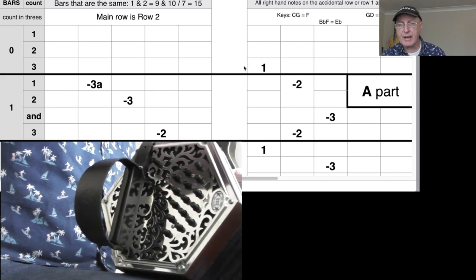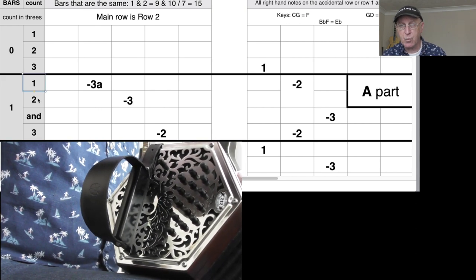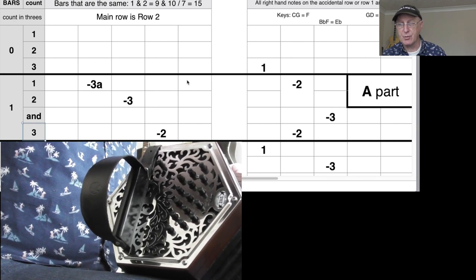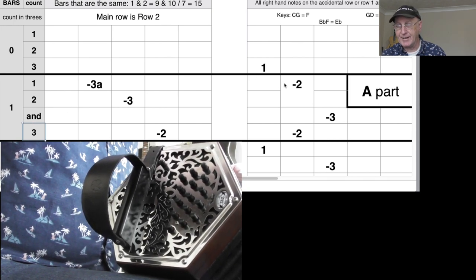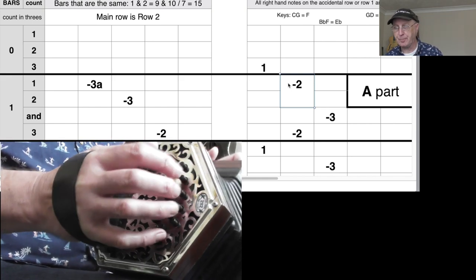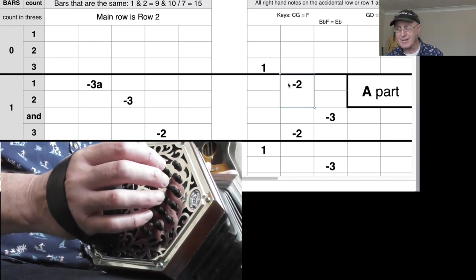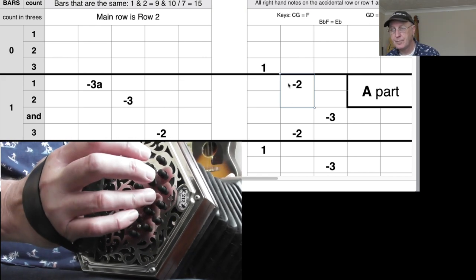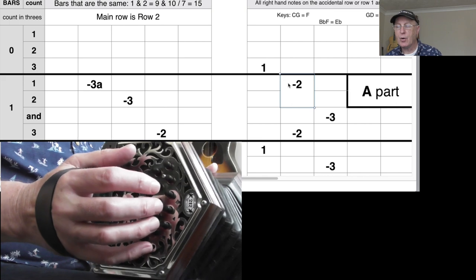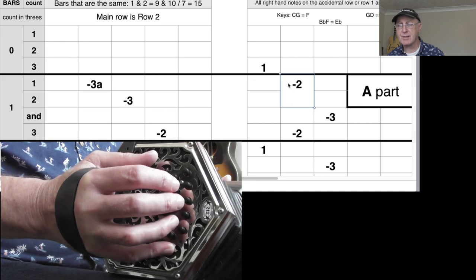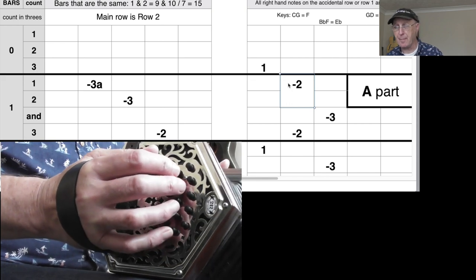Now you can see the counting over here on the left which is one two and three, okay, one two and three, and that gives you the timing of your tune on the right hand side and it sounds like this. Now all those notes are on the pull, we know that because on my tablature I put a minus sign to the left of the number.